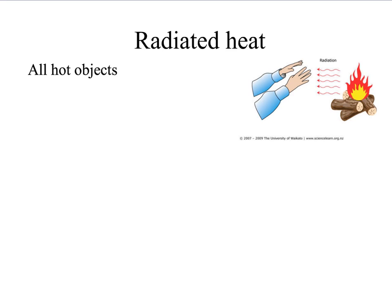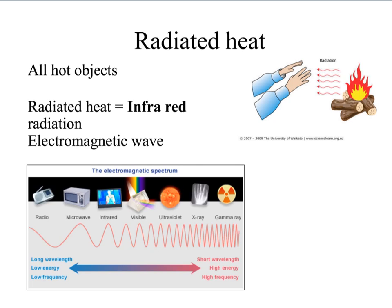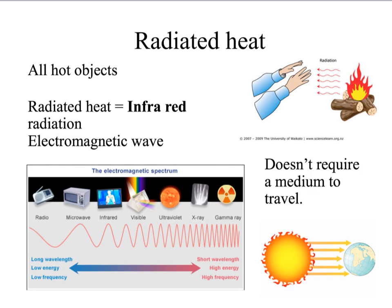So now on to heat radiation. All hot objects radiate heat. Radiated heat is actually another name for infrared radiation. Remember, this is what was used in our thermal imaging to make thermograms. Infrared is actually part of this thing called the electromagnetic spectrum. And we're going to come on to this more later on in the topic. Of the three methods of heat transfer, conduction, convection and radiation, radiation is actually the odd one out.